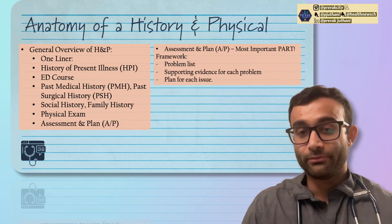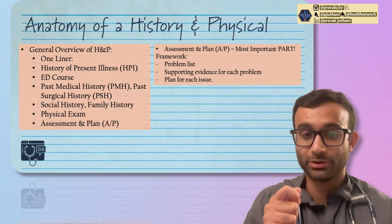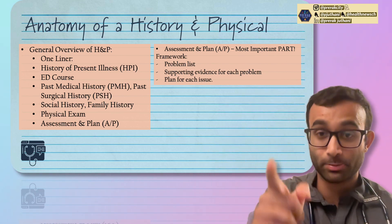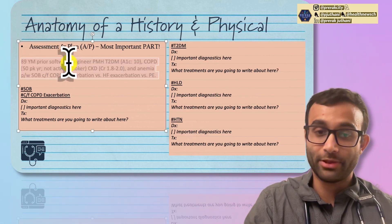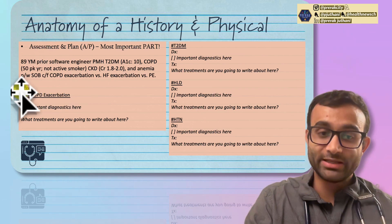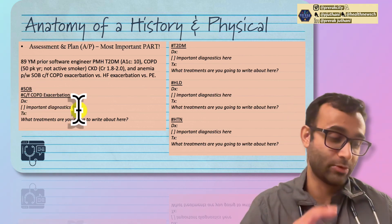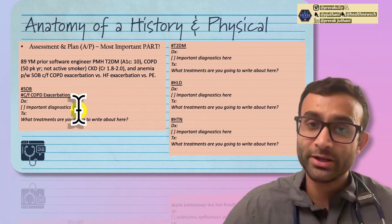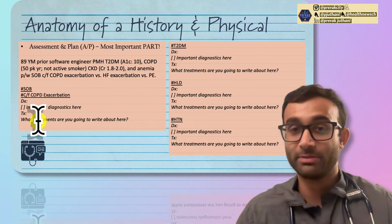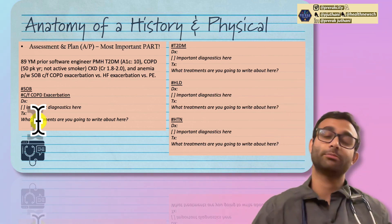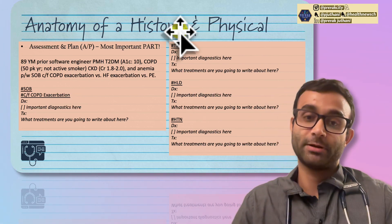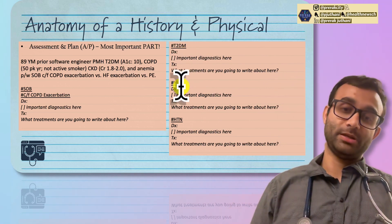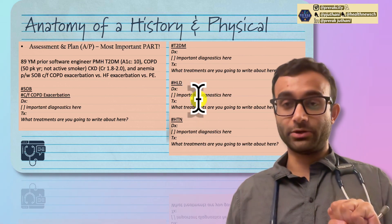Lastly, the assessment and plan — if there is one thing you learn from this, the assessment and plan is the most important part of the history and physical. It tells me what you think is going on and your plan for every single problem the patient has. For example, the patient with concern for heart failure exacerbation: you'd note you did an echo, chest x-ray, VBG — which did not show hypercarbia — and a troponin that was very high, so you're worried about an underlying heart issue but also a COPD exacerbation. Then you'd document what treatments you gave. Then go through each remaining problem the same way — diabetes, hyperlipidemia, hypertension — breaking down diagnostics and treatment for each.